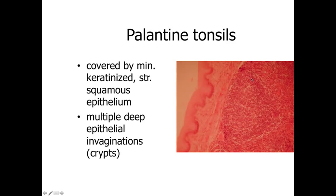The final structures we'll look at are tonsils. We have a palatine tonsil here, with a lymph nodule — a circular aggregate of lymphocytes, lots of small basophilic cells packed together. We know this is a tonsil because it's located in the connective tissue underneath a minimally keratinized stratified squamous epithelium, indicating a moist cavity subject to abrasion. When we see a lymph nodule underneath simple columnar epithelium, we know we're looking at a lymph nodule within a Peyer's patch within the intestines.